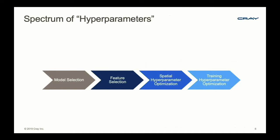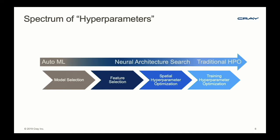I want to acknowledge that hyperparameter optimization can actually mean quite a lot of things. There's a full spectrum of hyperparameters. On the far right, there are training hyperparameters. There are also spatial hyperparameters—things like number of layers, size of layers, or connectivity in neural networks. We also have feature selection and model selection as hyperparameters. Traditional HPO sits at one end, neural architecture search in the middle, and automated machine learning covers all of these together.